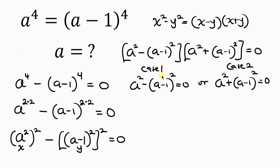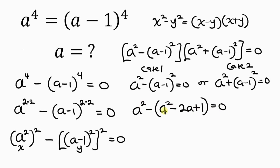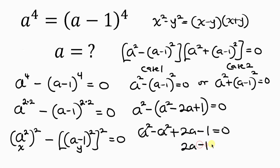Starting with Case 1, I'm going to expand the bracket. We have a squared minus, then expanding a minus 1 all squared, we get a squared minus 2a plus 1, equal to 0. Opening up with the negative outside, we get a squared minus a squared plus 2a minus 1 equal to 0. Since a squared minus a squared is 0, we have 2a minus 1 equal to 0.